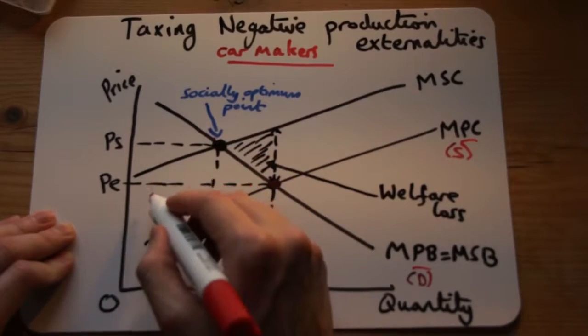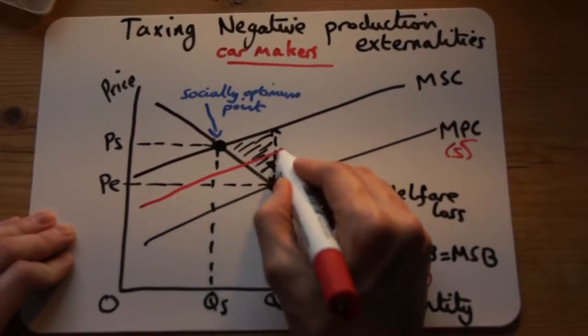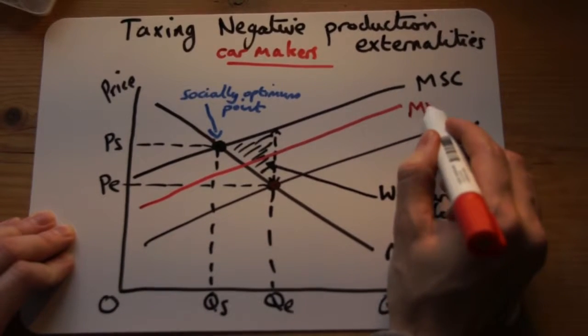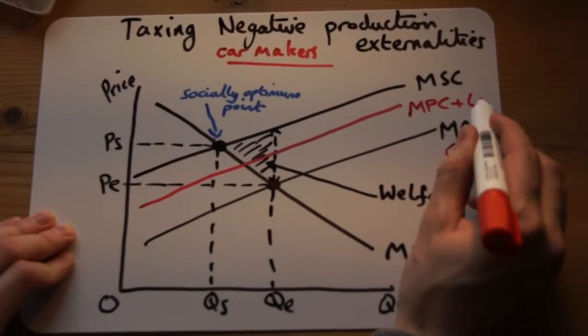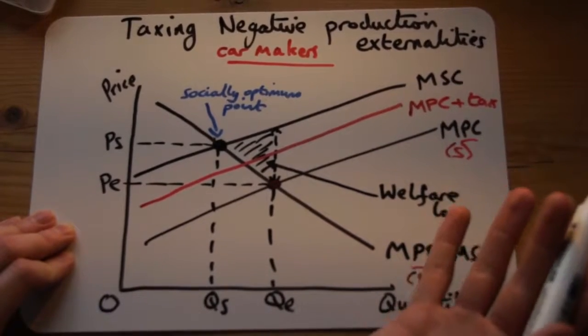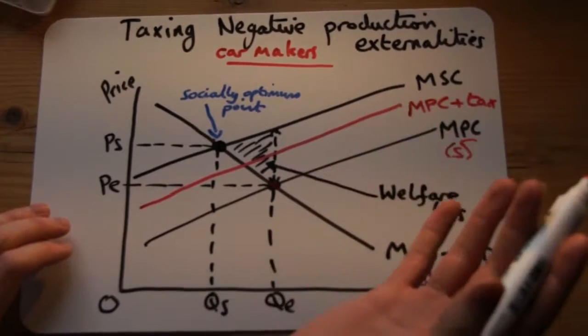If the government taxes them, their supply line would shift to the left. So the MPC line plus tax would shift inwards because their costs are higher, and so the supply line would shift to the left.